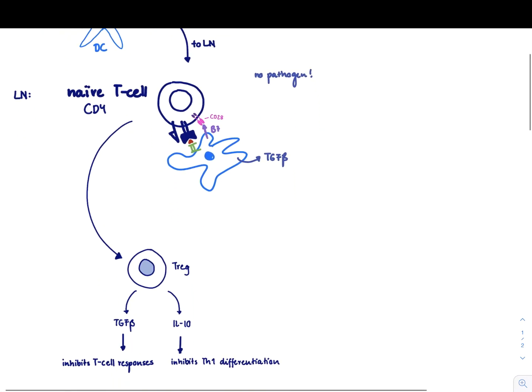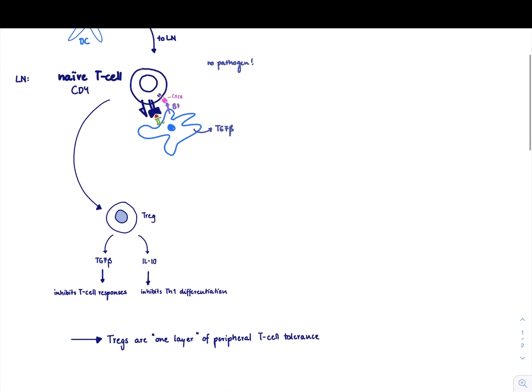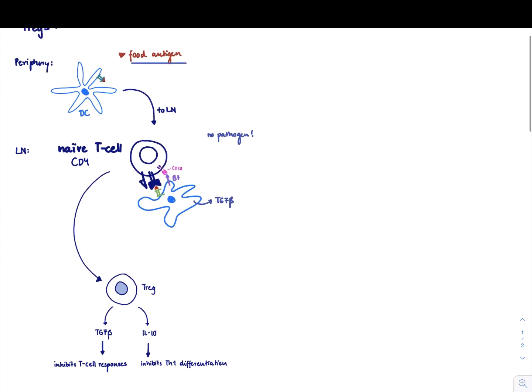A T-regulatory cell makes mainly TGF-beta, which inhibits all T-cell responses, and also IL-10, which inhibits particular Th1 differentiation. So the T-regulatory cells are really a layer of tolerance. Because if you think about it, we want to have a system in place that does not go crazy and does not initiate a huge immune response if you are just seeing food antigen or some self-antigen.